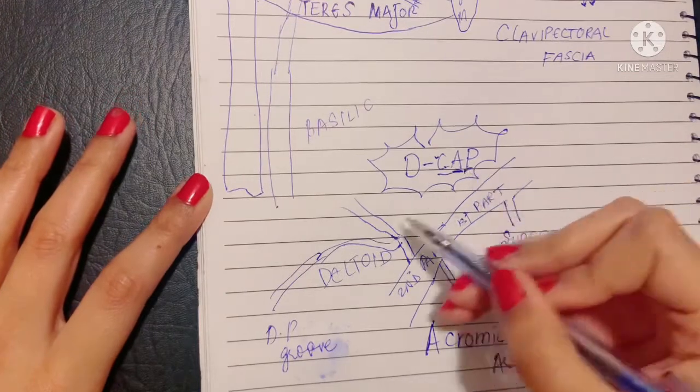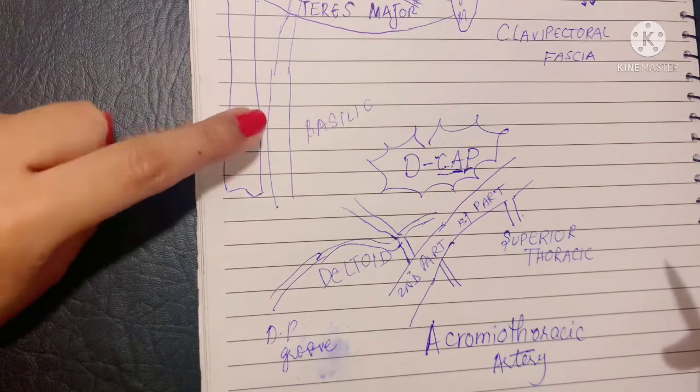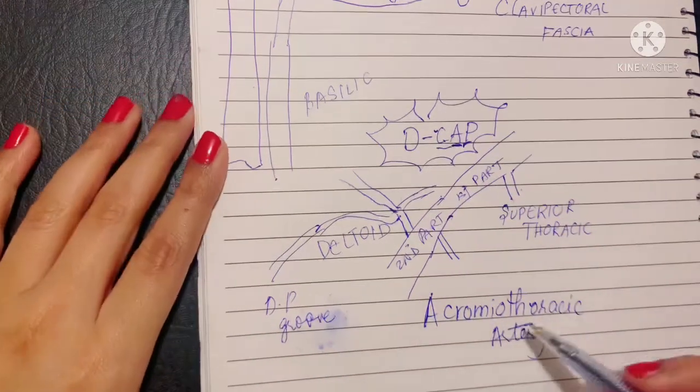And then finally we have the P which is the pectoral branch. This runs between the two pectoral muscles, namely pect major and pect minor, and supplies them. So this was all about the acromiothoracic.